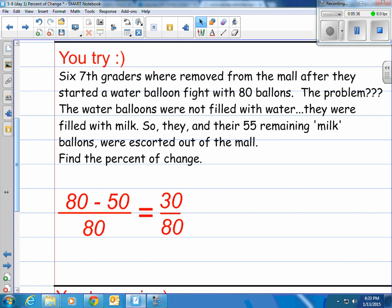So we have 25 over 80. Let's take a look at what that equals. 25 divided by 80 is 0.3125. Move the decimal over two spots, and that's 31.25%. And it's a decrease because it went from 80 balloons to 55 balloons. So the answer is 31.25% decrease.